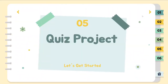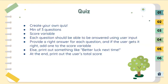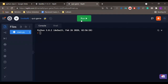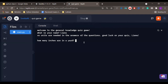This is going to be the last project, covering everything you've learned this session. Create your own quiz with a minimum of three questions. Each question should be answerable using user input. You need to provide the right answer for each question — if the user gets it right, add one point to the score variable; if they get it wrong, print something like 'better luck next time'. At the end, print out the user's total score. Here's an example if you want to see the code.